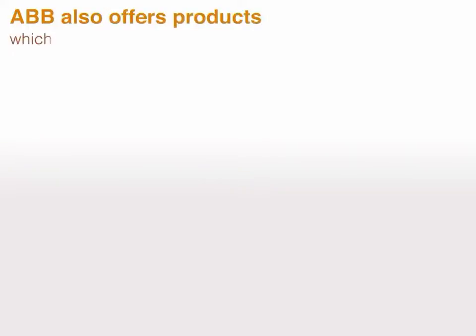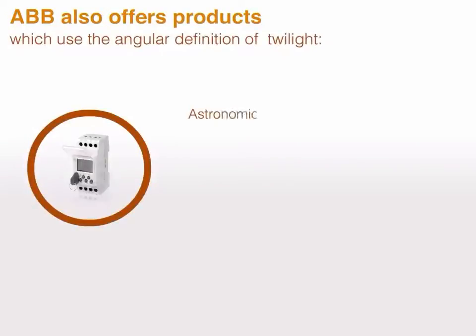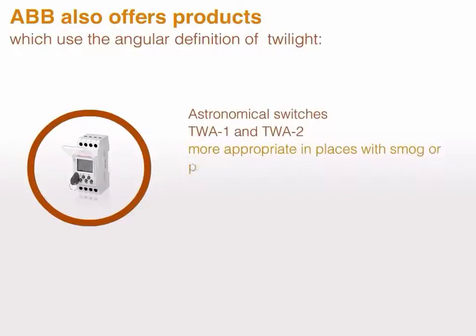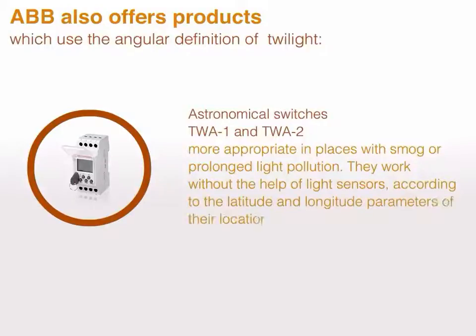ABB also offers products which use the angular definition of twilight — the astronomical switches TWA1 and TWA2. These are more appropriate in places with smog or prolonged light pollution. They work without the help of light sensors, according to the latitude and longitude parameters of their location.